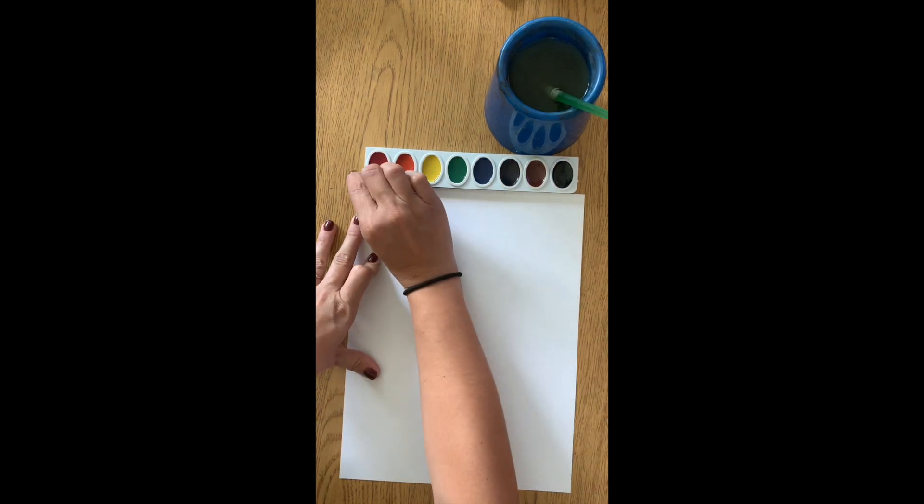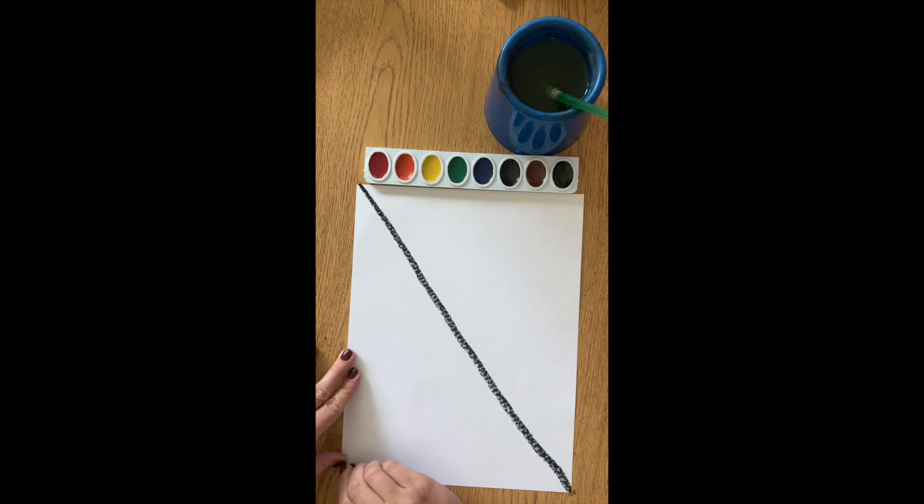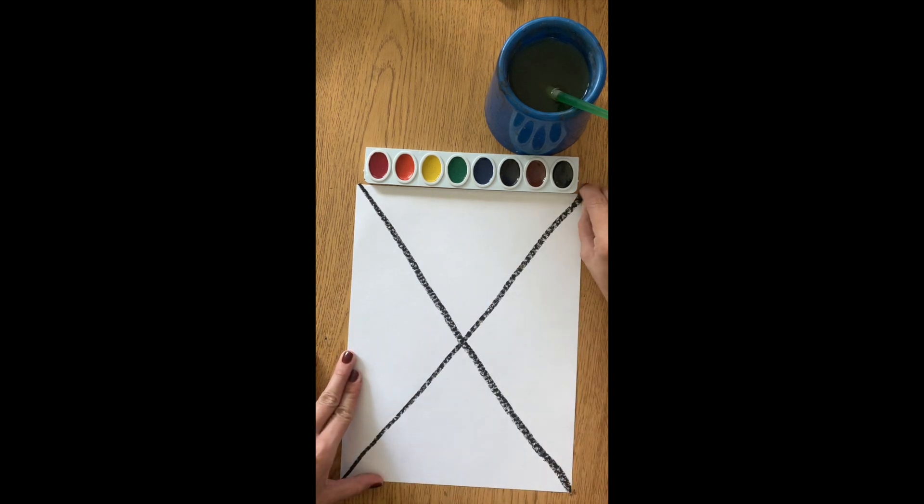To start our spider web, we will choose a dark color oil pastel, then create an X down the middle of our paper from corner to corner.